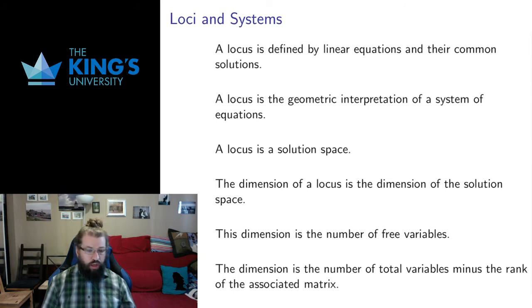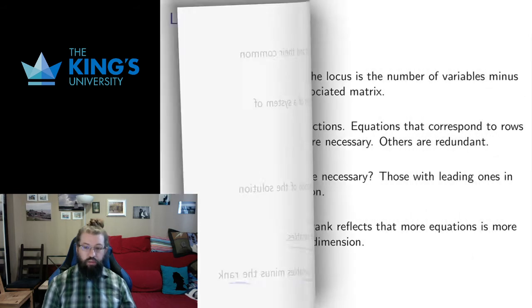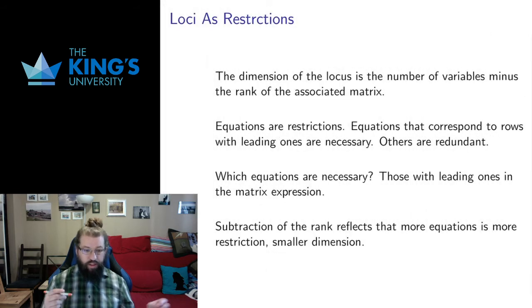Now one thing I didn't point out in those videos is that this number of free variables is actually the number of total variables minus the rank of the matrix. That's because of what we're doing with the row reduction algorithm. Each column with a leading one is a variable that's determined, and the rank reflects those because the rank is the number of leading ones.